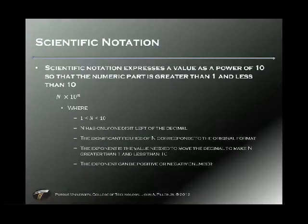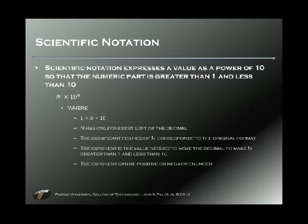Here are the rules for scientific notation. Scientific notation expresses values as a power of 10 so that the numeric part is somewhere between 1 and 10. We use the format of capital N times 10 to the nth, where capital N is a number between 1 and 10. We're allowed one digit to the left of the decimal, and as many digits to the right as needed to maintain the significant figures of the original number.